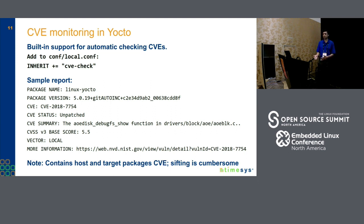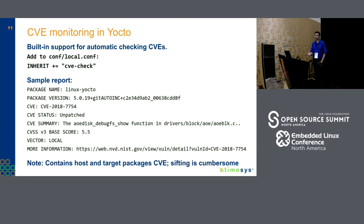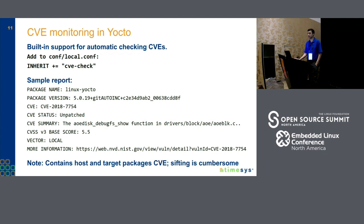If you're coming from a build system such as Yocto, Yocto has a capability called the CVE check class. All you have to do is inherit this class in your local.conf and run your regular BitBake command to build. At the end of the build, it gives you a report which contains a summary of all the CVEs in your build. The only downside is that both native packages and target package CVEs are all munched together into a giant list, so you'll have to sift through it, which is cumbersome.